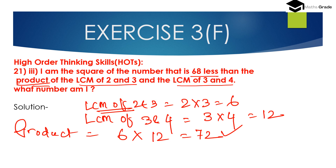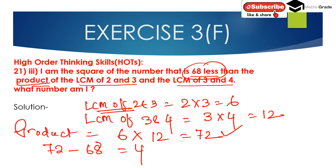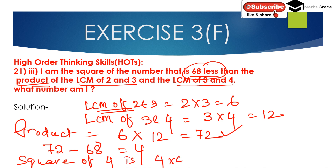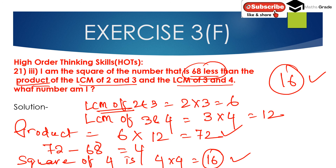The number that is 68 less than 72 is 72 minus 68, which equals 4. I am the square of that number: the square of 4 is 4 multiplied by 4, which is 16. So the answer is 16.